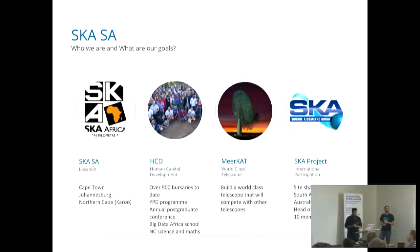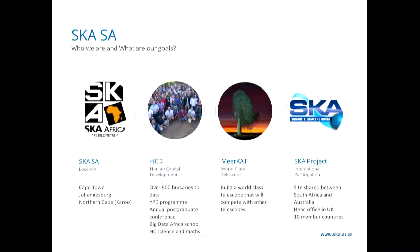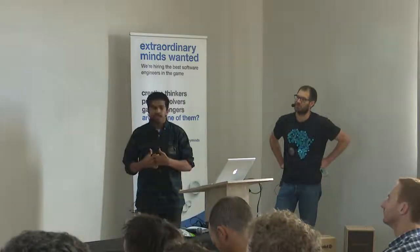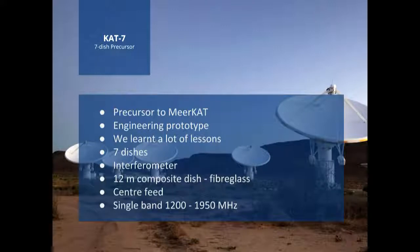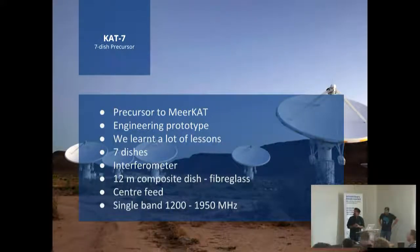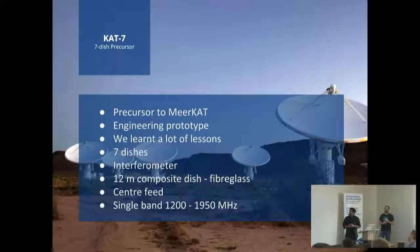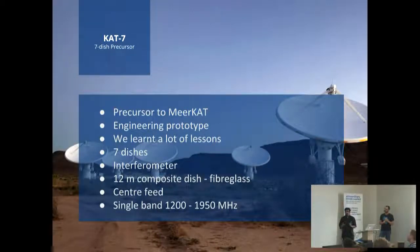One of the goals was to create a world-class telescope — that's what we do with MeerKAT — to compete with other radio telescopes. The other goal is to partake in the SKA project, which is an international project with the site shared between South Africa and Australia and 10 other member countries. KAT-7 is a seven-dish precursor to MeerKAT, built as an engineering prototype and science experiment. It's still operational today, still producing science. KAT stands for Karoo Array Telescope.